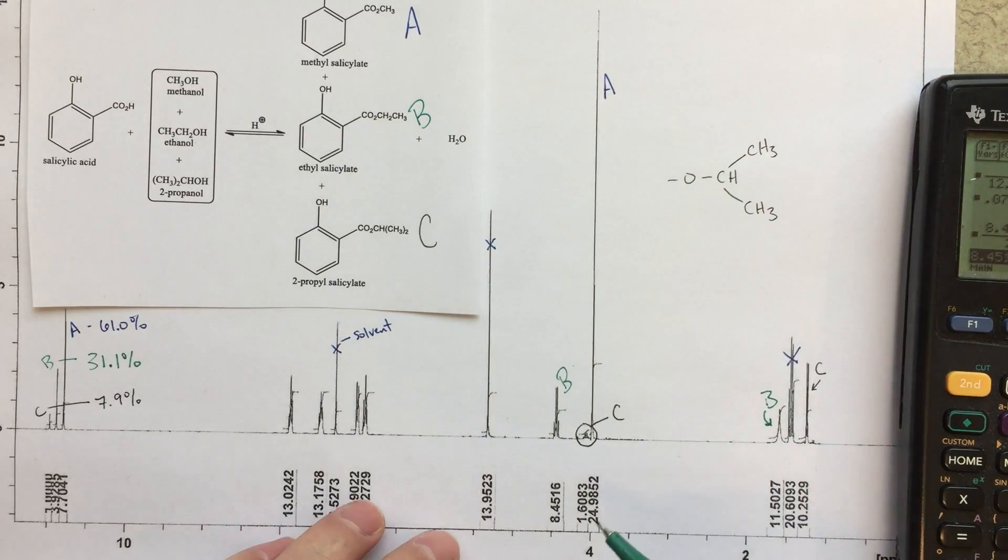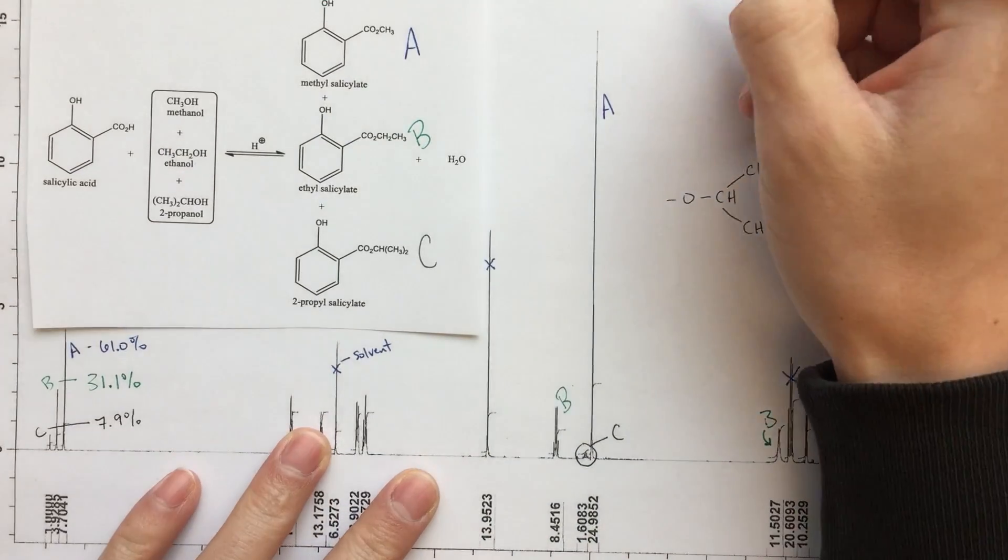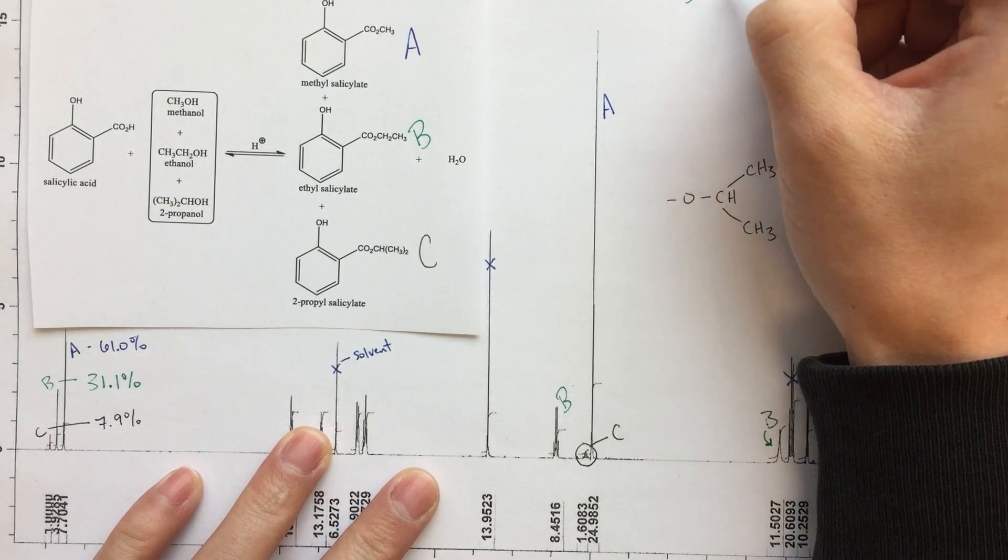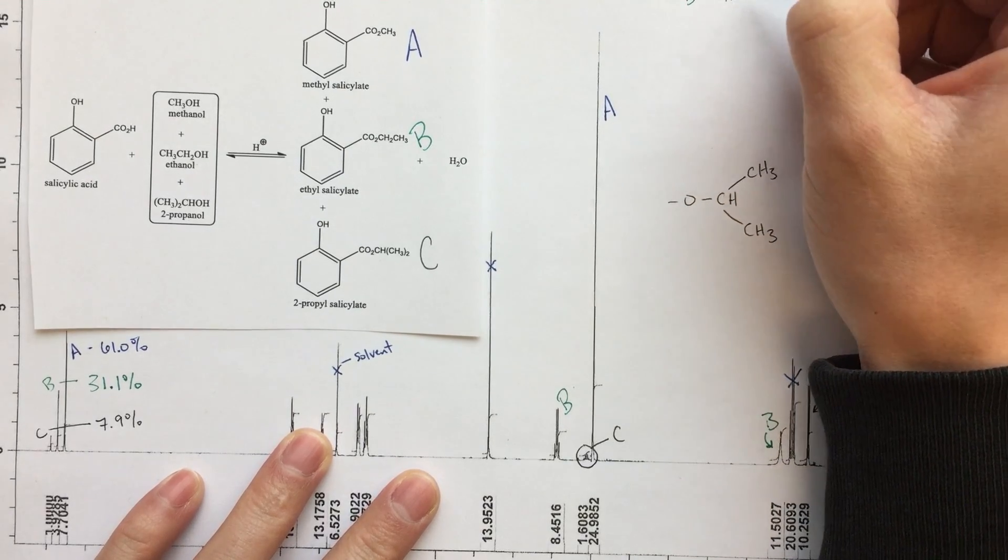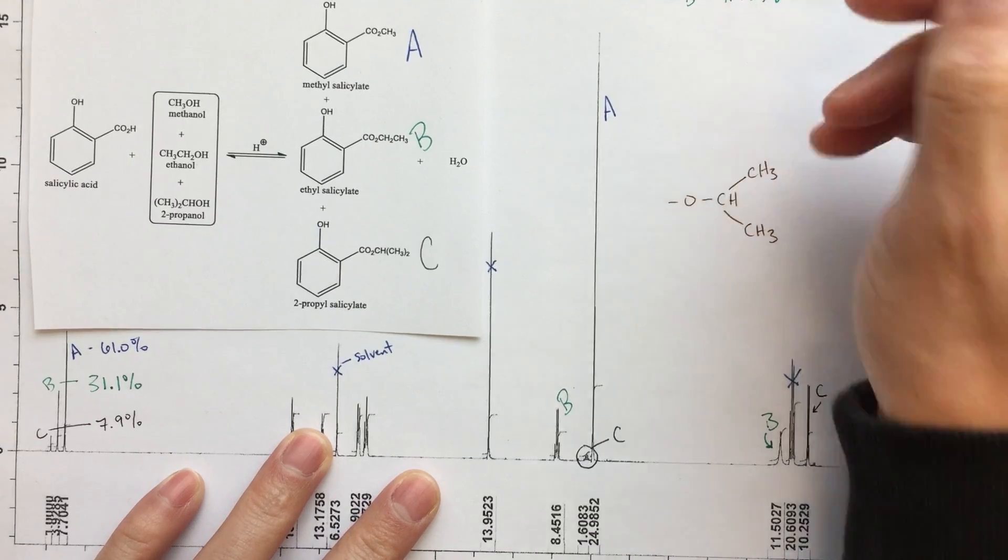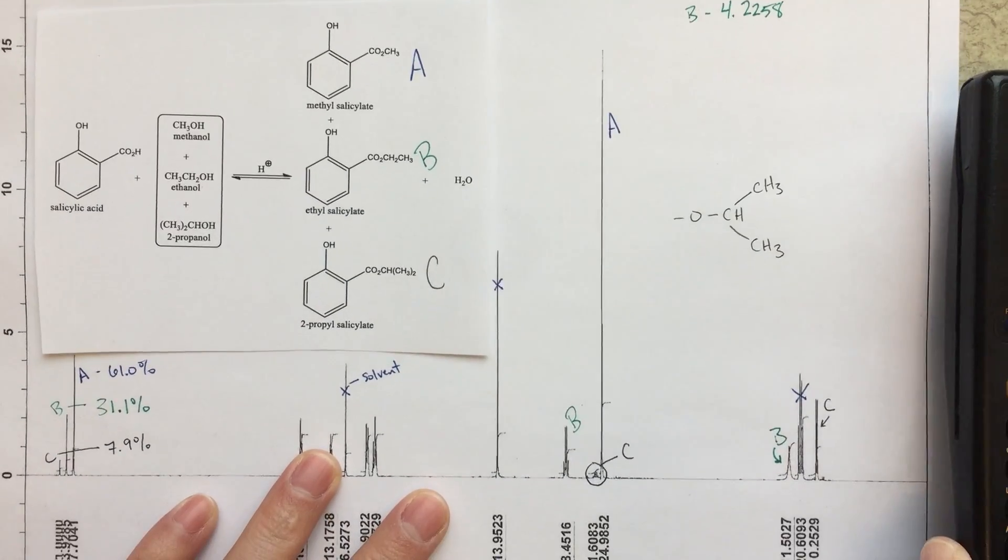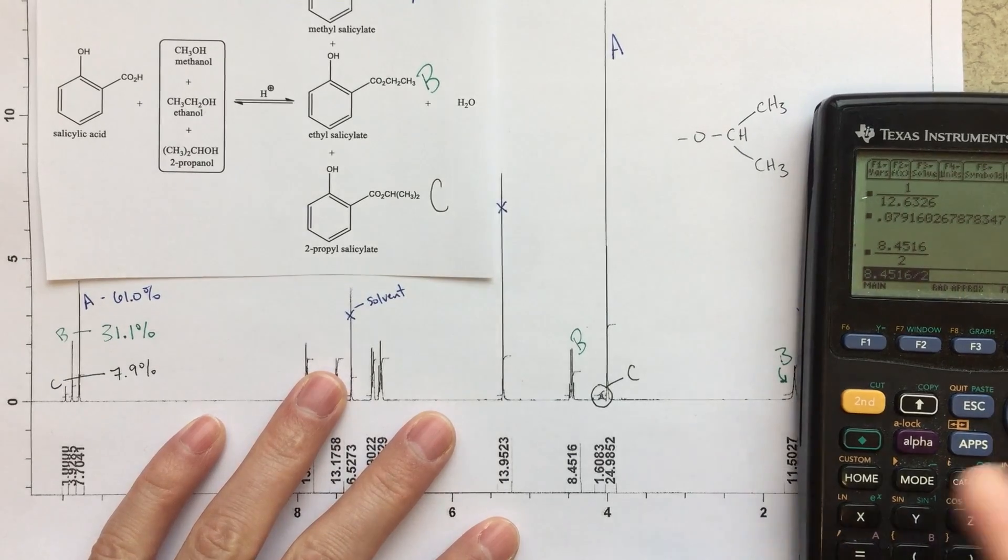So we'll write it maybe up here. B is going to be, the integral should be 4.2258, and I guess I should make it so you guys can see that as well. We'll show you in a second.